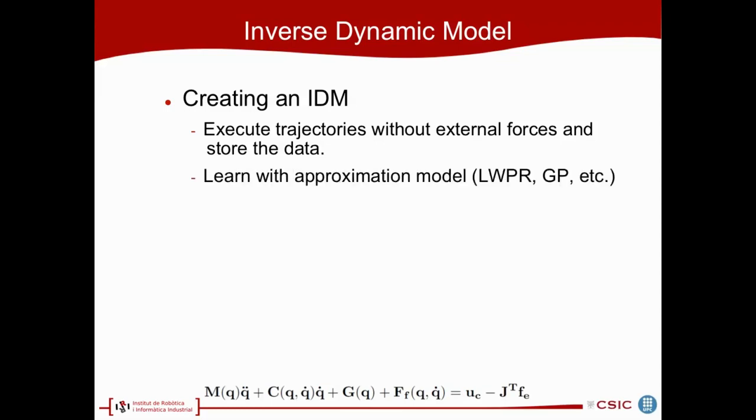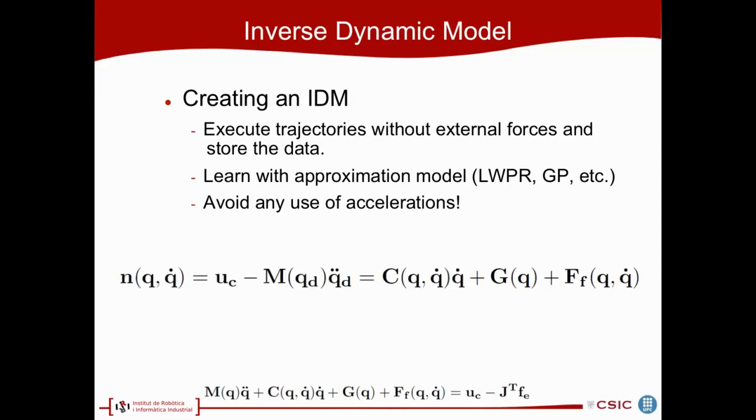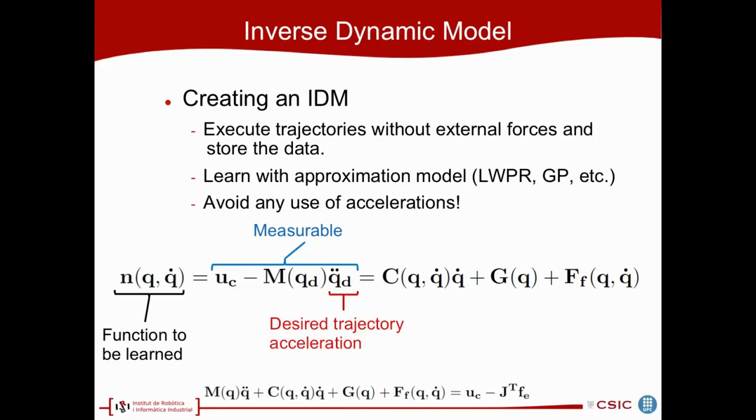Then we learn the torques measured depending on the state with different approximation models, which can be the locally weighted projection regression, Gaussian processes, or any other. Keeping in mind that we must avoid the use of accelerations, what we did was to learn this function n here, which is a combination of the computed torque, the inertia, and the desired acceleration. We use this desired acceleration because it's noise-free. Having computed this model, we switch to the state observer and force estimation.